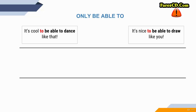There are situations, however, in which you can use ONLY BE ABLE TO and you cannot use CAN. For example: 'It's cool to be able to dance like that.' 'It's nice to be able to draw like you.' You know that there are patterns in English which need TO plus infinitive. In these cases, you need BE ABLE TO. You can't say 'it's cool to CAN' — it's 'it's cool to be able to.'